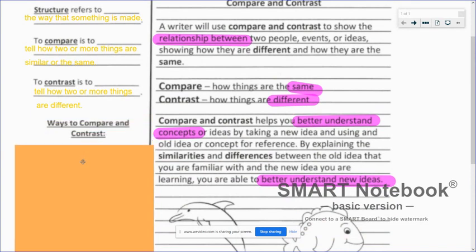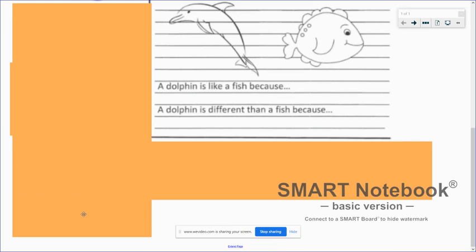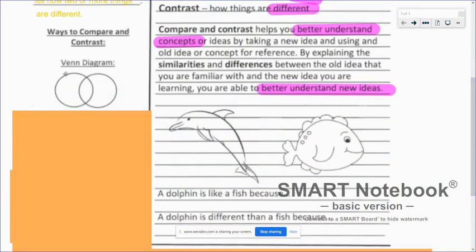And then here are ways to compare and contrast. And I know that you have done these in your classes in the past. You have used Venn diagrams where you put a title of, let's say, the dolphin over here and the fish over here and whatever they have in common, you would list where the two circles overlap and whatever they have that is different goes into those sides. And we've even done them with three circles at times.